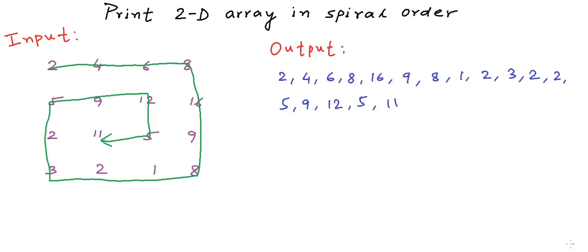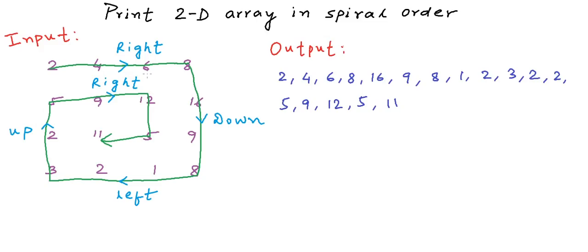There are some straightforward observations. First, we can have four possible directions while traversing the array: left to right (right), top to bottom (down), right to left (left), and bottom to top (up). We will change directions in a cyclic manner: right to down, down to left, left to up, and up back to right. We will not traverse any row or column twice.